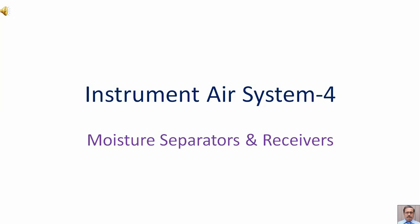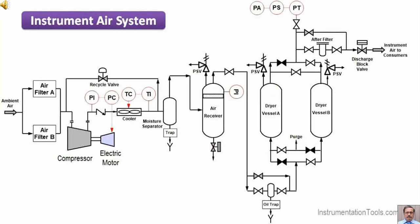Air System Part 4. In this lecture, moisture separators and receivers are going to be discussed. This is the typical layout of an instrument air system. In this layout, we can see the position of the moisture separator — it is just after the after cooler. After the moisture separator, the instrument air is going to the air receiver. So we are going to discuss moisture separator and the air receiver.